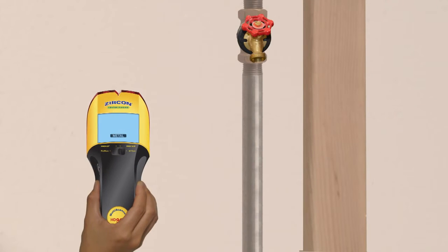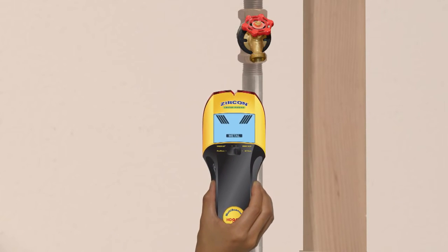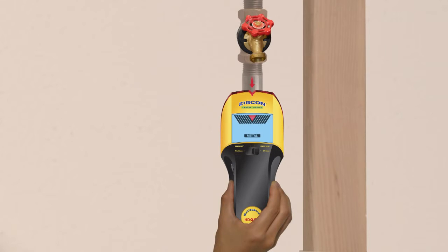To find metal, select metal scan. The target indication bars ramp when you near metal, and the spotlight pointer shines when you reach the center.